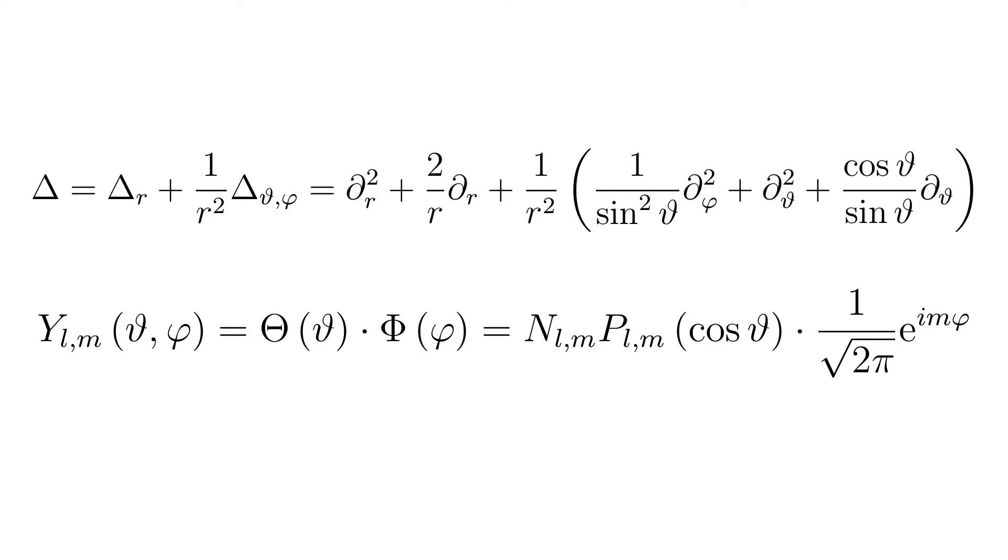The separation approach shows that the spherical surface functions determine the shape. ylm of theta and phi equals theta of theta times phi of phi equals nlm times plm of cosine of theta times 1 over the square root of 2 times pi times e to the power of i m phi.